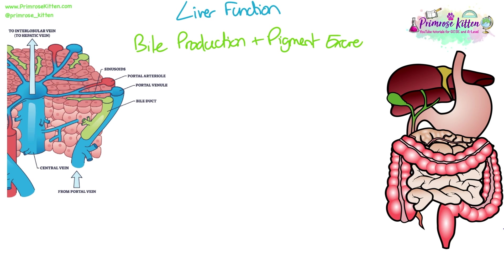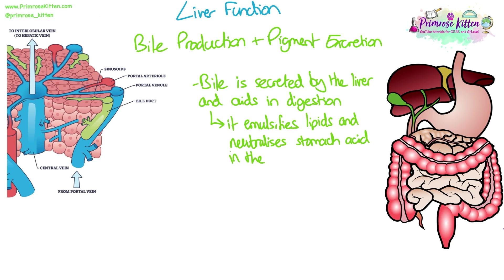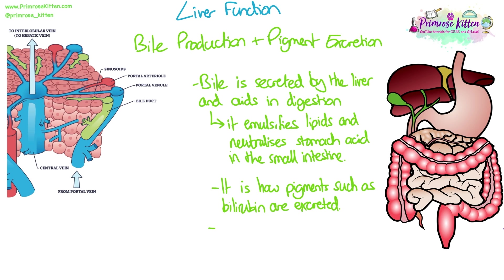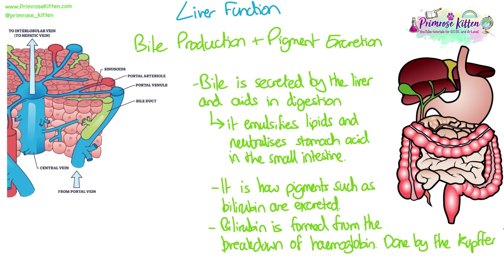Bile production and pigment excretion. Bile is secreted by the liver and aids in digestion — it emulsifies lipids, breaking large fat droplets into smaller fat droplets, and it helps to neutralise stomach acid in the small intestine. It is also how pigments such as bilirubin are excreted. Bilirubin is formed from the breakdown of haemoglobin, which is a pigment found in red blood cells, and this is done by the Kupffer cells.